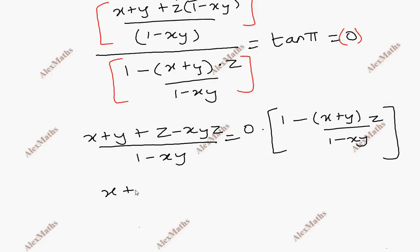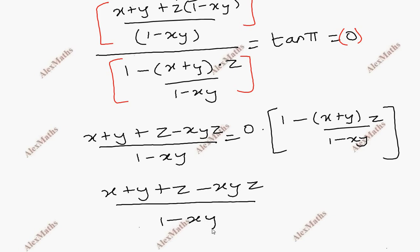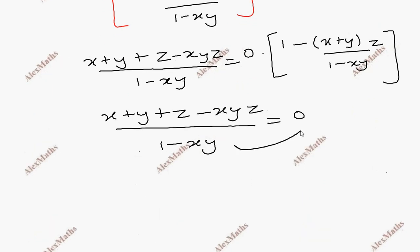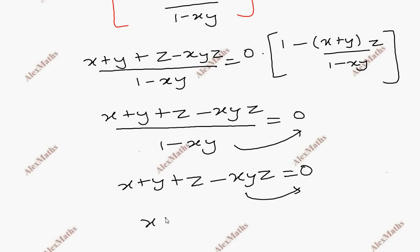Therefore x plus y plus z minus xyz, whole divided by 1 minus xy, equals 0. This gives us x plus y plus z minus xyz equals 0, which means x plus y plus z equals xyz. Hence proved.